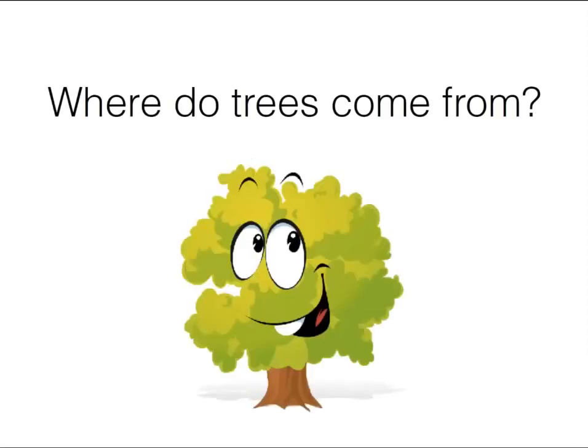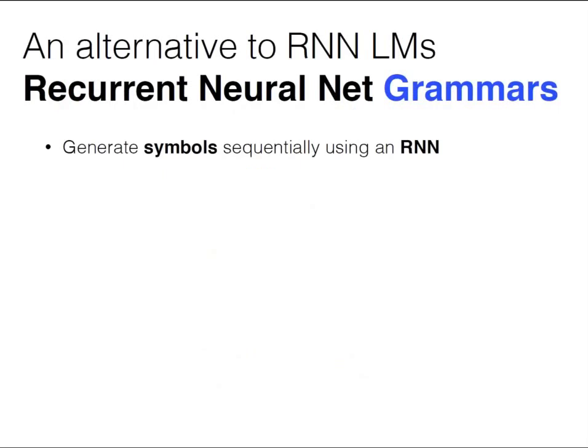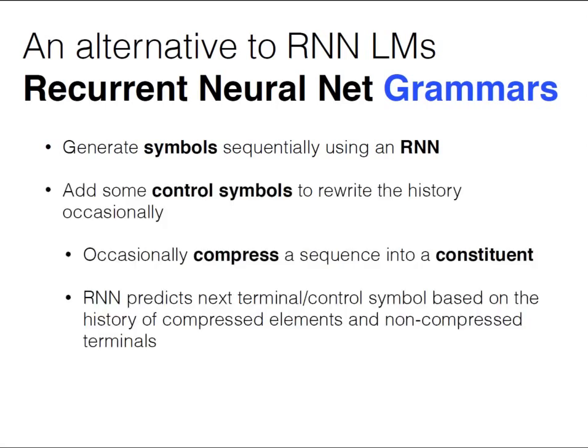Now let's talk about where trees come from. I'm going to go back to the language modeling problem and talk about an alternative to RNN language models that we'll use to parse sentences into trees. What we're going to do is generate sentences by sequentially generating symbols using an RNN — a straight-up RNN language model — but then add some control symbols that periodically rewrite the history of that RNN. You'll spit out a bunch of words, then say 'I think these last ten words were actually one syntactic constituent,' and compress them to a single vector.